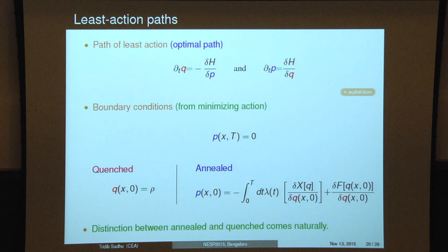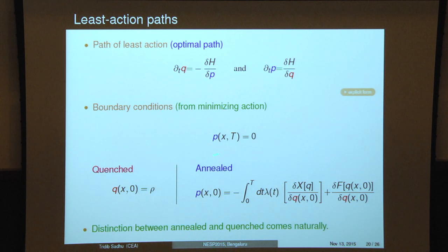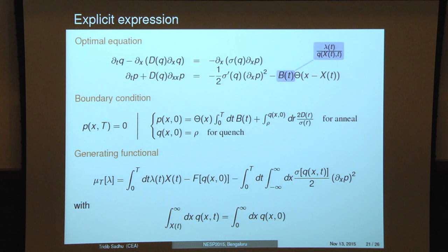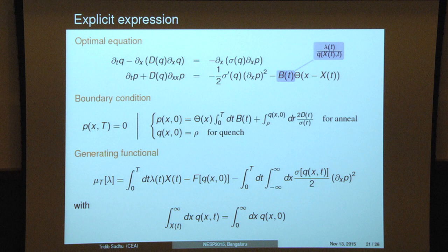The equations for the least-action fields P and Q have a Hamiltonian structure with boundary conditions coming from the minimization of the action. One boundary condition on the conjugate field is the same for both types of initial conditions, but the second boundary condition depends on which initial condition you chose. So essentially one just has to solve these coupled nonlinear partial differential equations with appropriate boundary conditions, and put the result into the formula for the cumulant generating function, to get the entire multi-time statistics.